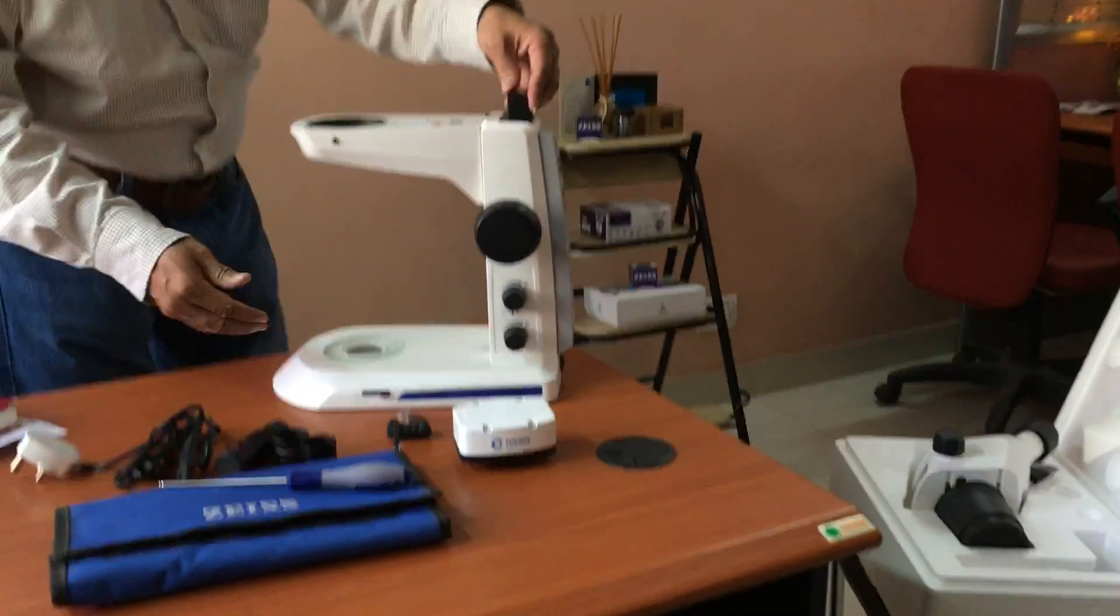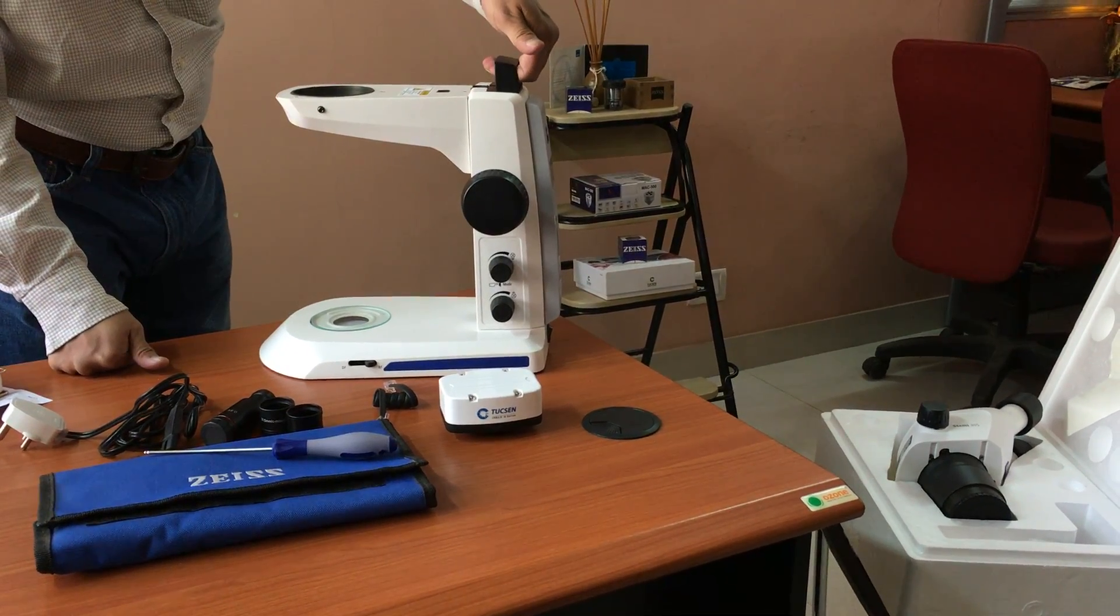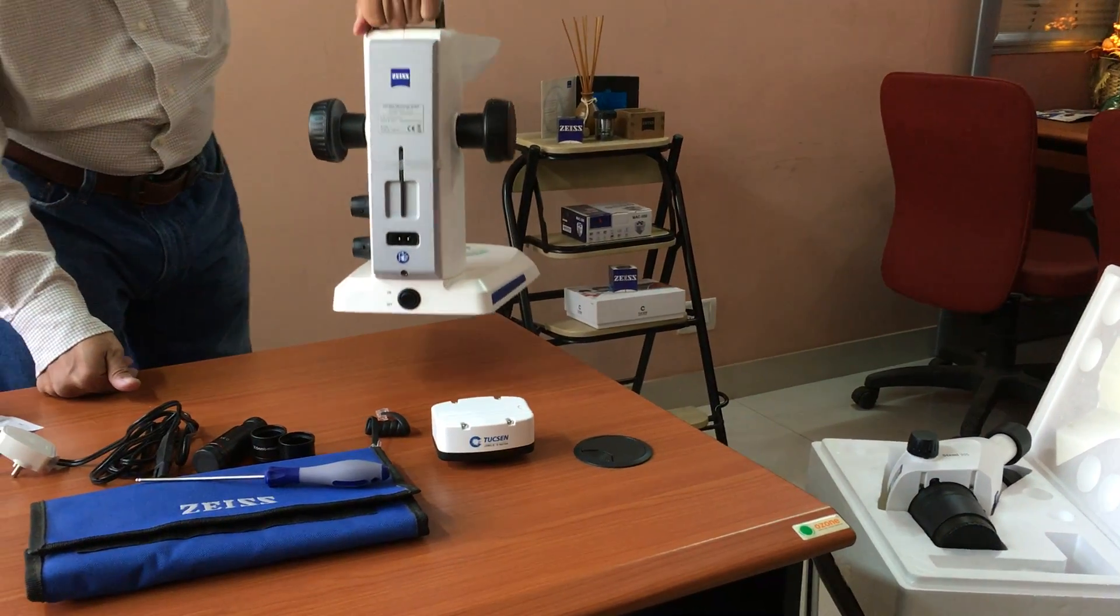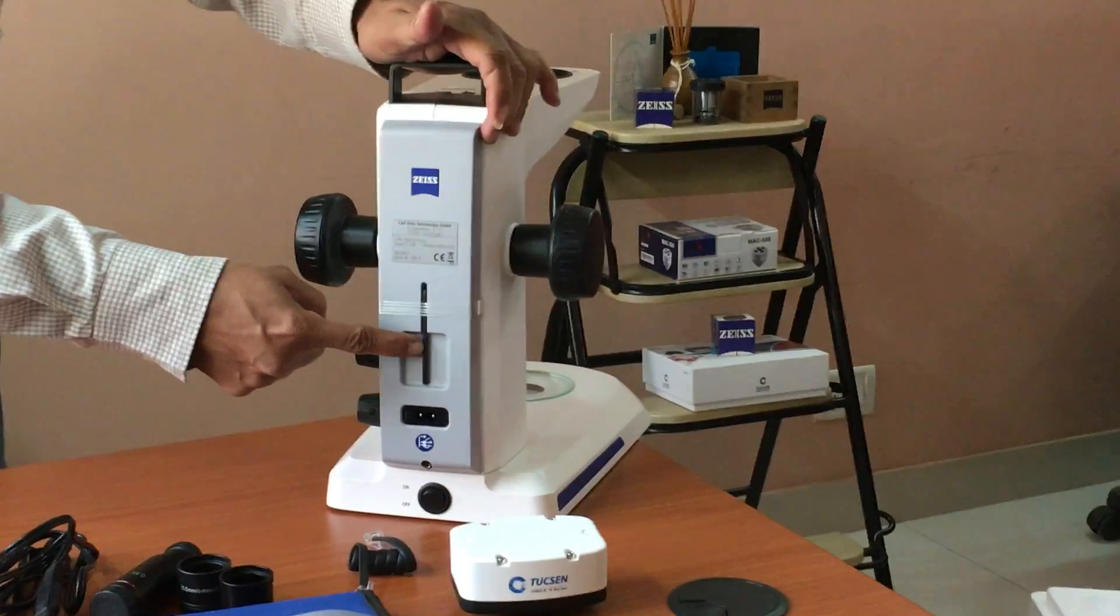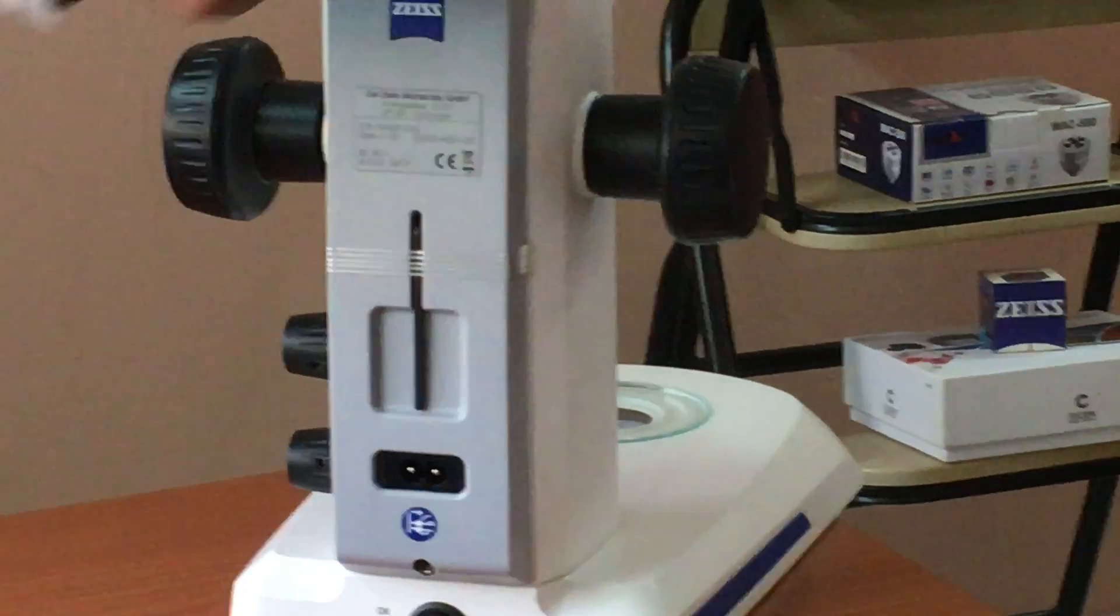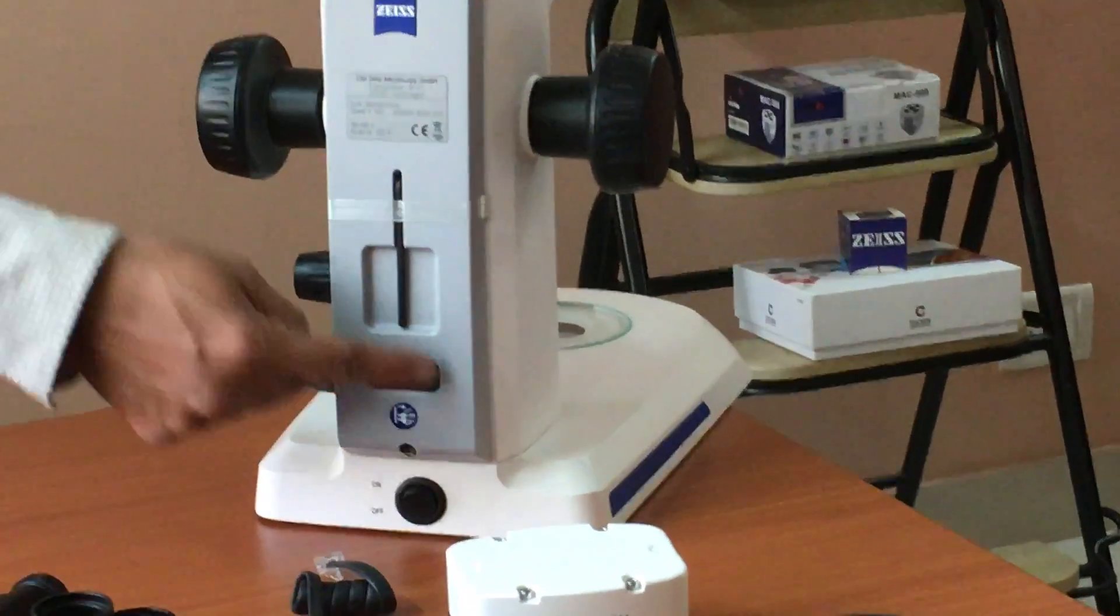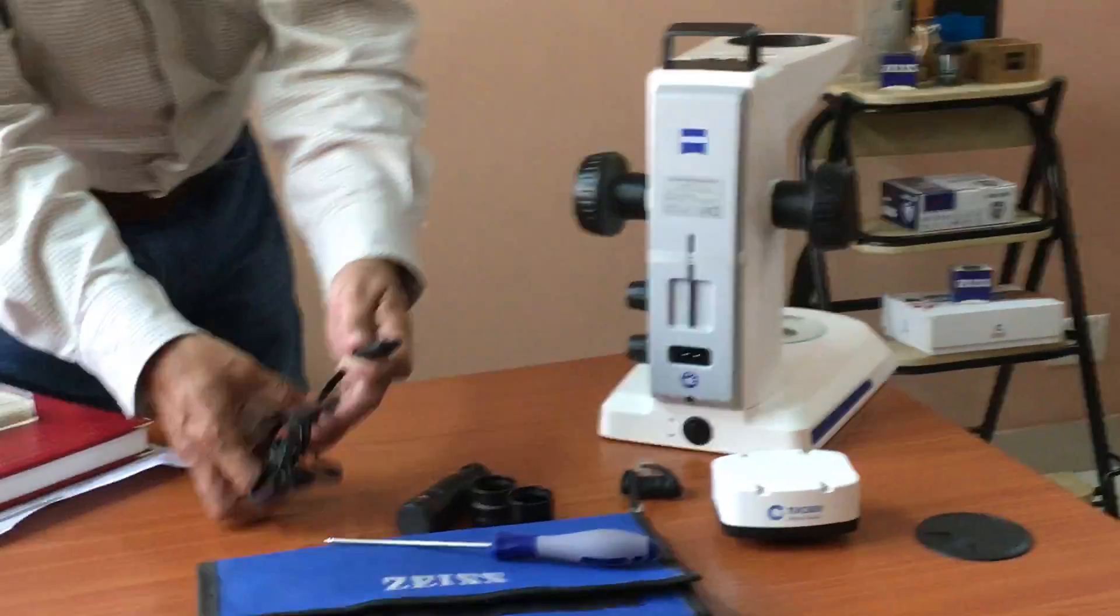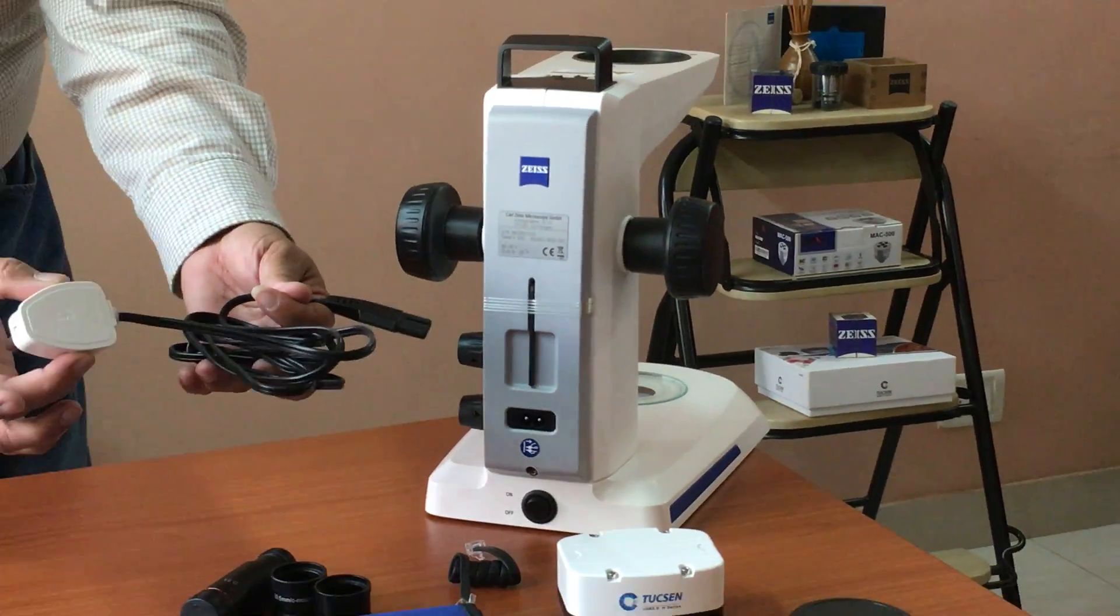We first check the stand. Always hold the stand at the handle, lift the stand holding this at the back. At the back of the stand you have an allen key for fixing the main body. You have the mains connector where we put this mains connection to this point. This goes to the wall outlet.